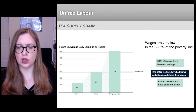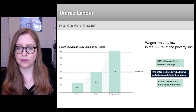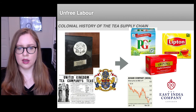The companies that sell the tea that these workers make are highly profitable. The world tea market is estimated to be worth around £30 billion annually, and yet we found unfree labor and extraordinarily low value capture are endemic at the base of the supply chain.